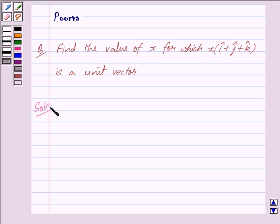Now we are given that x(î + ĵ + k̂) is a unit vector. Since x(î + ĵ + k̂) is a unit vector...